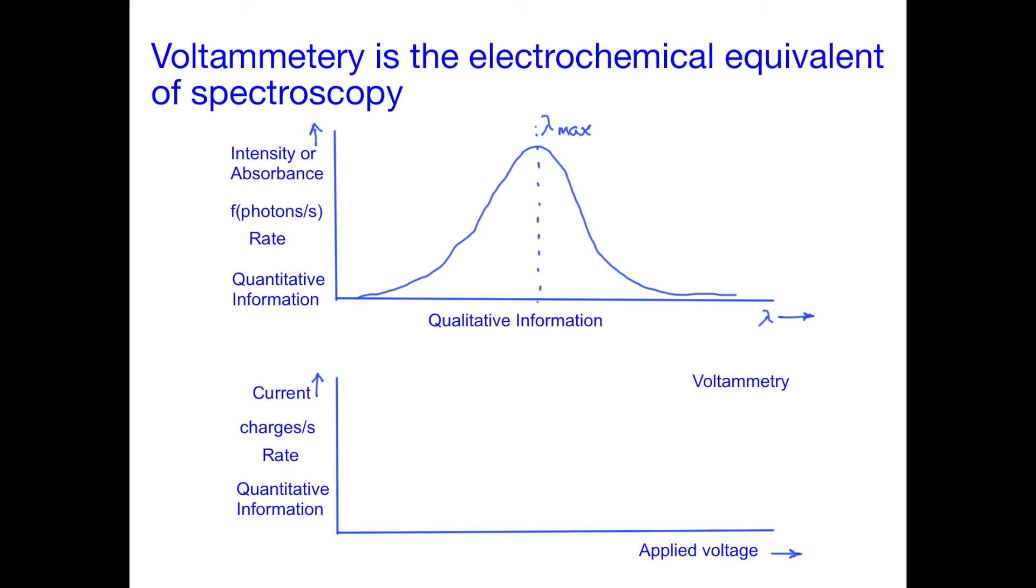In some types of voltammetry, we observe peaks in the current. Other forms of voltammetry produce waves. In these experiments, the position of these events along the voltage axis is related to the electronic structure of the analyte. In some spectroscopic work, we hold the wavelength and monitor the signal as a function of time, such as with a UV detector in an HPLC.